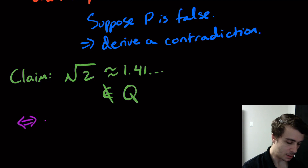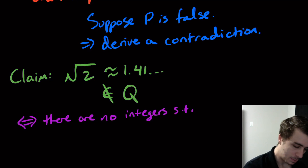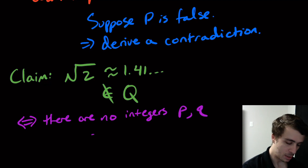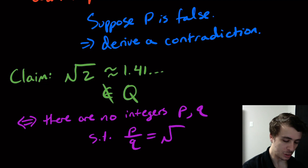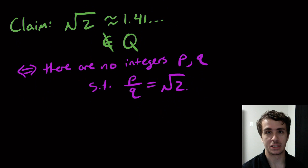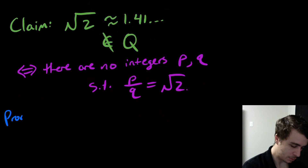In other words, this is the same as saying there are no integers p and q such that p over q is equal to the square root of two. That's just the equivalent way of formulating the statement. So let's prove this by contradiction.